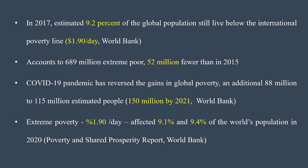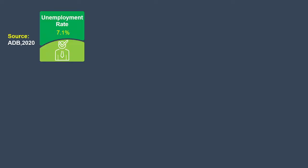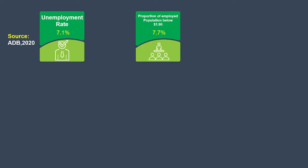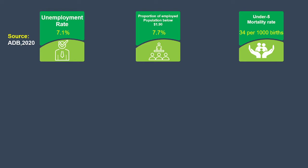There was a sudden drastic change during the pandemic, and after it, extreme poverty has increased worldwide. In India, based on the Asian Development Bank report, the unemployment rate is around 7.1 percent, the proportion of employed population living below the World Bank poverty line is around 7.7 percent, and the mortality rate is 34 children per every thousand births.